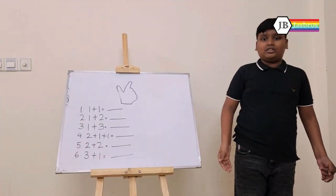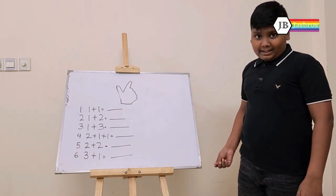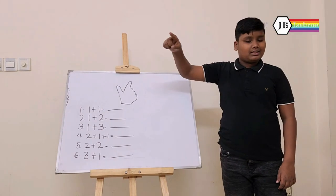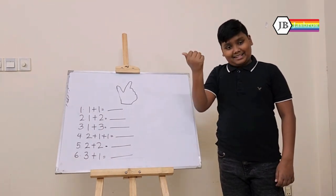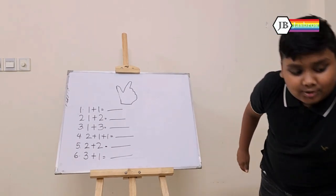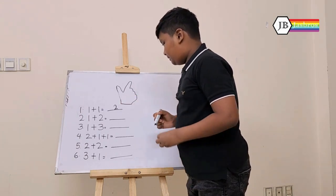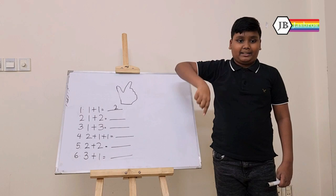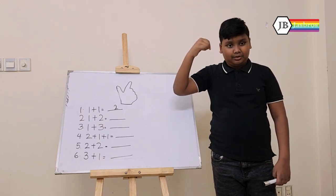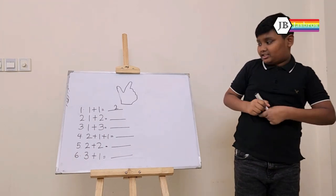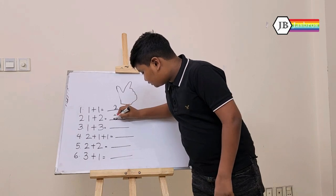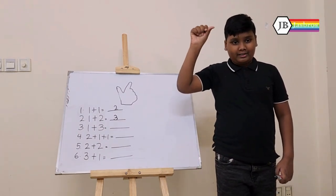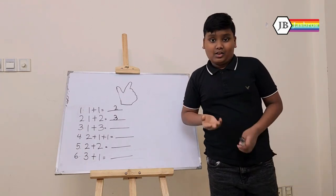For our last sums, we are going to use mental. The first sum is 1 plus 1. So we need to draw our abacus. We add 1 and add another one, and the answer is 2. So we're going to write 2. Our next sum is 1 plus 2. Let's draw our imaginary abacus — add 1 and add 2, and the answer is 3. For our third sum, it is 1 plus 3. Let's add 1 and then plus 3 — 1, 2, 3 — so the answer is 4.